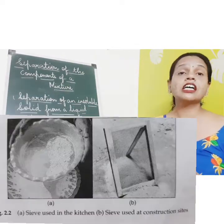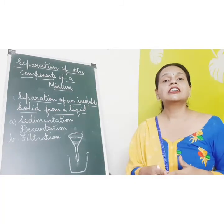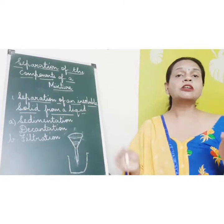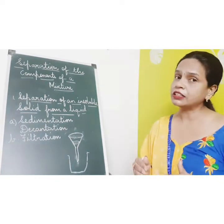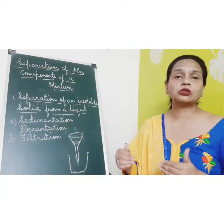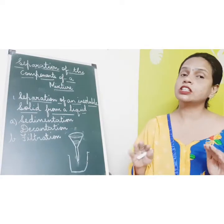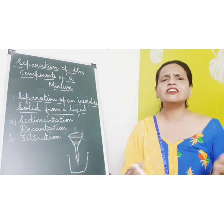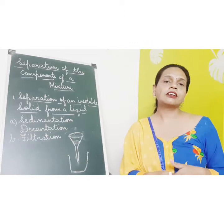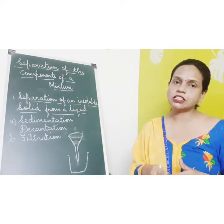Then sieving. A sieve is a mechanical device — it has a mesh which is attached to a frame. When we put the mixture on the sieve, the particles that are smaller than the holes of the sieve pass through, and the larger particles stay on the sieve. For example, wheat flour can be sieved and the larger particles will stay on the sieve.